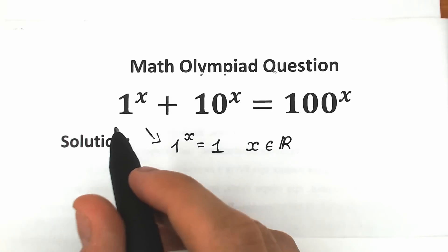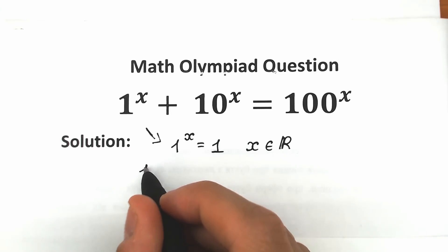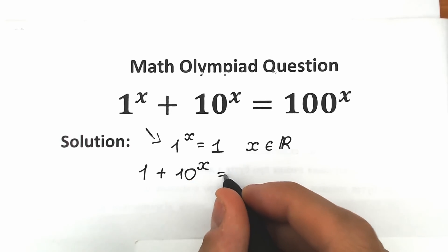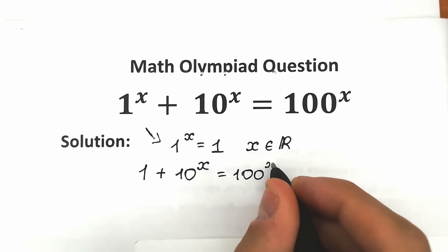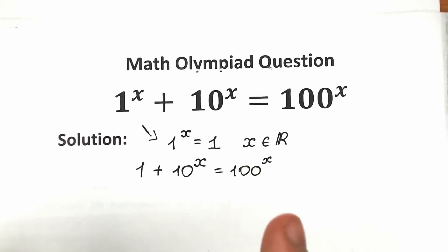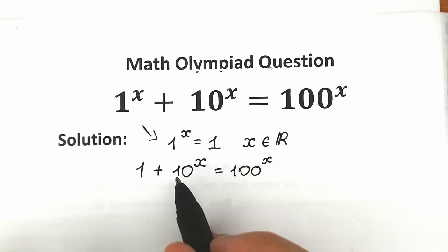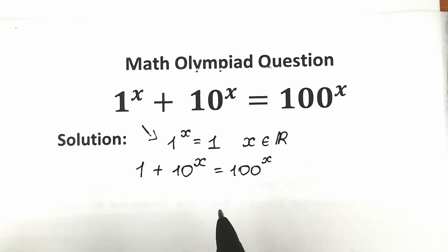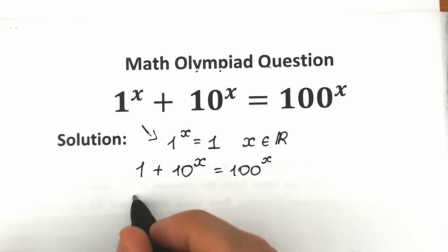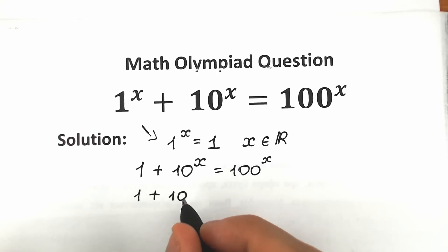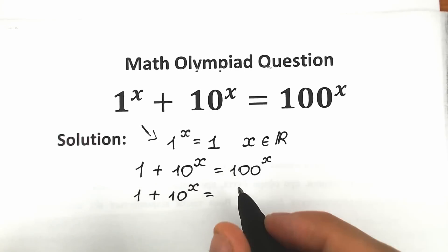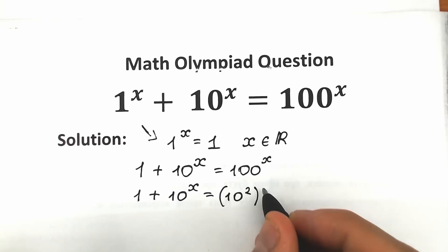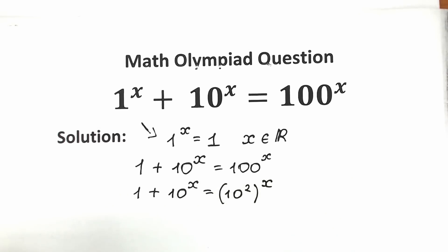So instead of 1 to the power x we write 1, giving us: 1 plus 10 to the power x equals 100 to the power x. This is our first step. Next, let's try to create the same bases, because 10 and 100 are closely related in terms of powers. We can write 100 as 10 squared. So we have: 1 plus 10 to the power x equals (10 squared) raised to the power x.